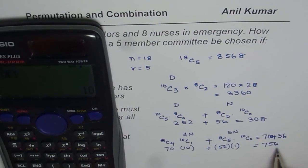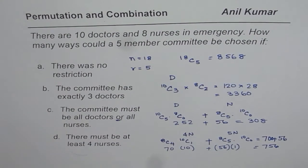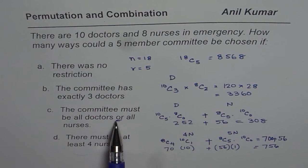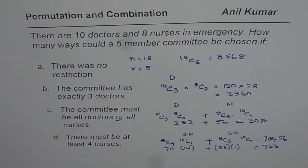To summarize: when selecting different kinds of committees, you need to know when to add and when to multiply. When there are options joined by 'or', you add. When joined by 'and', you multiply. In a committee, since all members are at the same level, it is always a combination. Remember these two rules and they should help you answer most questions. I'm Anil Kumar — I hope that helps, thank you and all the best.